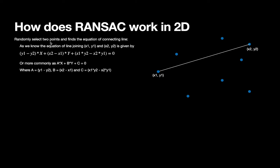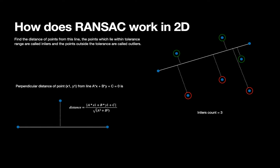How does RANSAC work in two dimensions? For any given iteration, it identifies two points and finds the equation of the line connecting those two points. In our case, those two points have coordinates (x1, y1) and (x2, y2). The equation of the line passing through these two points is: (y1 - y2)x + (x2 - x1)y + (x1·y2 - x2·y1) = 0, or more commonly as ax + by + c = 0, where a = y1 - y2, b = x2 - x1, and c = x1·y2 - x2·y1.